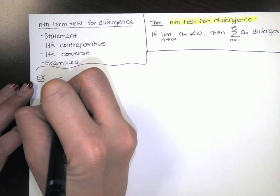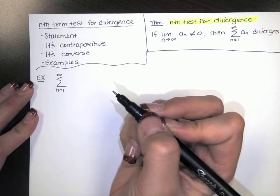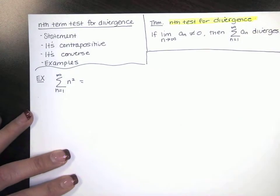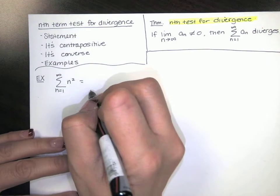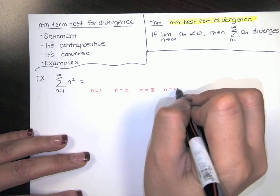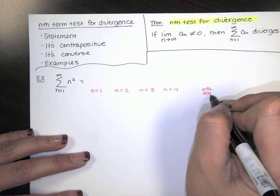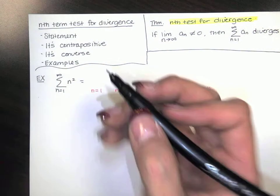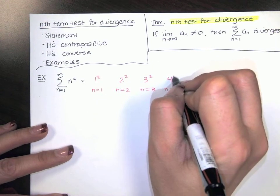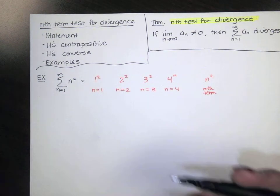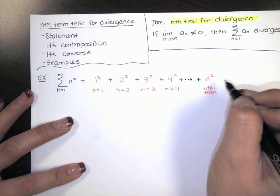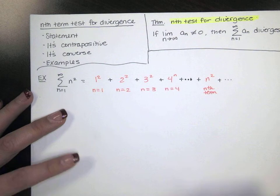Let's say we have the sum as n goes from 1 to infinity of n squared. If I write this out just to get a sense of what's going on, I'll get 1 squared when n equals 1, 2 squared when n equals 2, 3 squared when n equals 3, 4 squared when n equals 4, and eventually n squared. And remember, we're adding all of these up: 1 squared, 2 squared, 3 squared, 4 squared, eventually n squared, and we're summing them. There are more terms in between and the series keeps going forever.